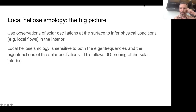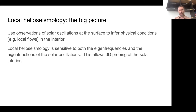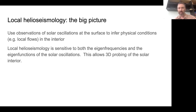So the big picture. We want to use observations at the solar surface to infer physical conditions in the interior. For example, we're thinking about how do we measure flows underneath the surface. Local helioseismology is the collective grouping that includes methods that are sensitive to the eigenfrequencies and also the eigenfunctions of the solar oscillations. It's the sensitivity to the eigenfunctions that allows you to probe in 3D.